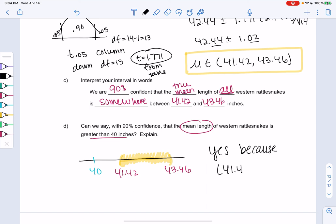So yes, and that's because my interval, 41.42 up to 43.46, is definitely greater than 40. And that is our first confidence interval with means.